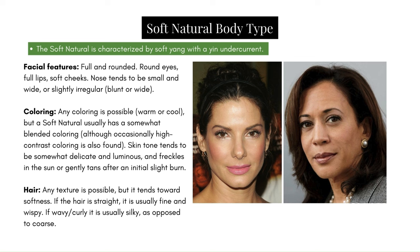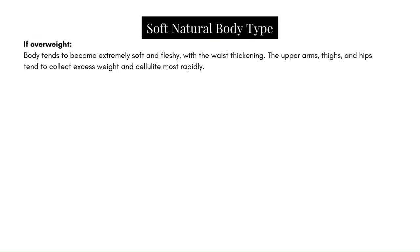Hair: any texture is possible, but it tends towards softness. If straight, it is usually fine and wispy. If wavy or curly, it is usually silky as opposed to coarse. Any hair texture is likely possible. If overweight, the body tends to become extremely soft and fleshy, with the waist thickening. The upper arms, thighs, and hips tend to collect excess weight and cellulite most rapidly.